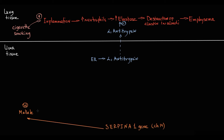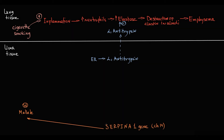Apart from the M allele, there is the S allele that encodes moderately low antitrypsin production, the Z allele that encodes very low antitrypsin production, and the null allele that encodes no antitrypsin production at all.